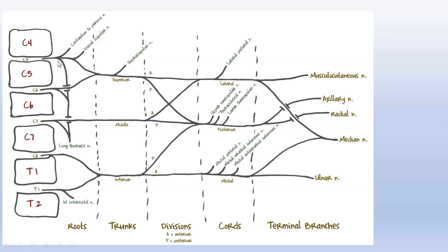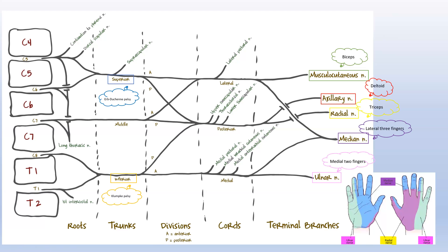Other important nerves: the long thoracic nerve comes from C5 through C7, sits on the lateral rib cage, innervates the serratus anterior just on top of the ribs, and is responsible for pinning the shoulder blade as the shoulder is used. A lesion causes winged scapula, seen in total and radical mastectomies. Thoracodorsal innervates the latissimus dorsi. Upper subscapular innervates the subscapularis; lower subscapular innervates the teres major — these involve rotator cuff muscles but are less likely to come up on board-style questions.